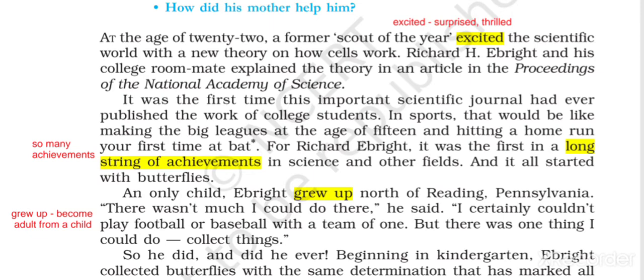At the age of 22, a former Scout of the Year excited the scientific world with a new theory on how cells work. Richard H. Ebright and his college roommate explained the theory in an article in the Proceedings of the National Academy of Science. So Richard Ebright's age was 22 when he surprised the world of science with this new theory. His roommate was his colleague in this research, and they published their article in that magazine — the Proceedings of the National Academy of Science.